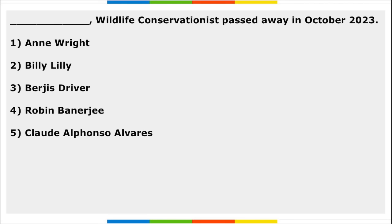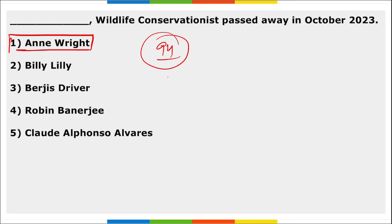Wildlife conservationist N.A. Wright passed away in October 2023 at the age of 94. She was one of the last British expatriates who stayed on after Indian independence in 1947. She was a wildlife campaigner, tiger enthusiast, horse breeder, and friend of leading politicians and royalties. She also received the Sanctuary Asia Lifetime Service Award in 2013.